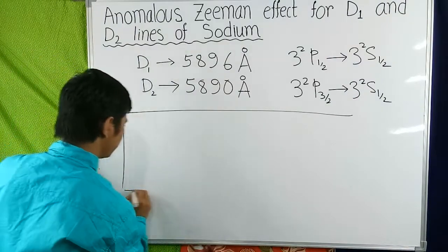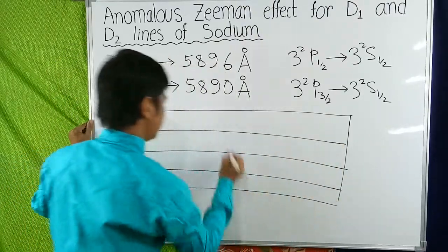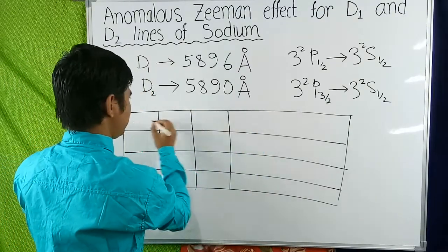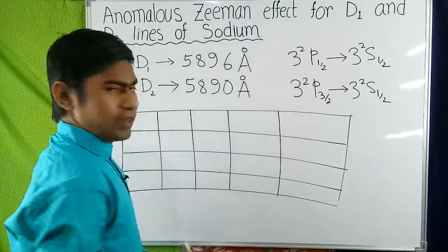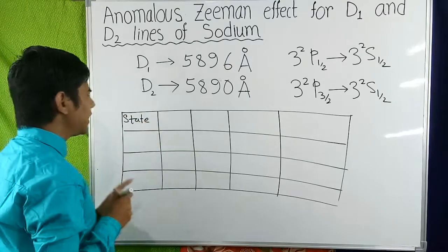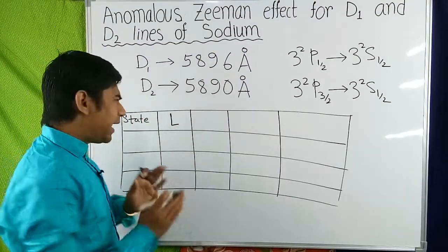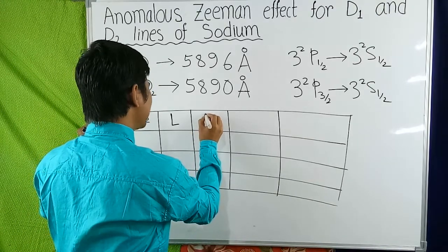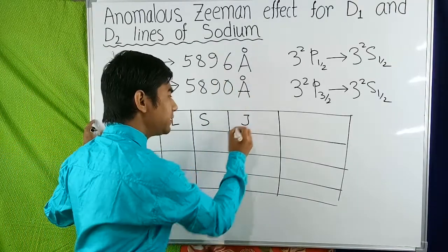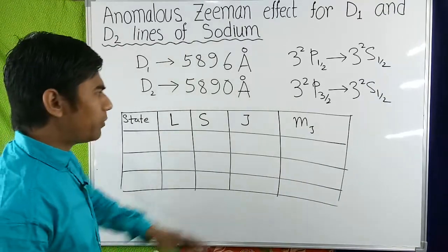Suppose we make a table. Here we write the states — that is, the energy levels. Here we write the values of L corresponding to each state. And here we write the values of Mj, that is the total magnetic quantum number of the atom.